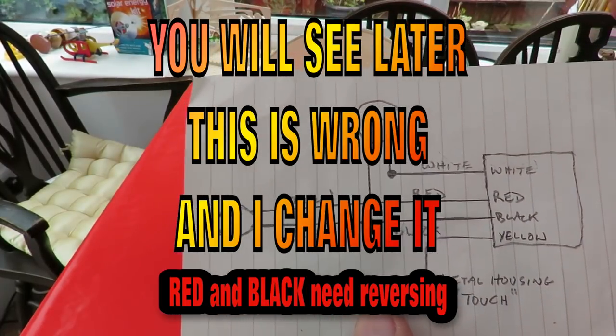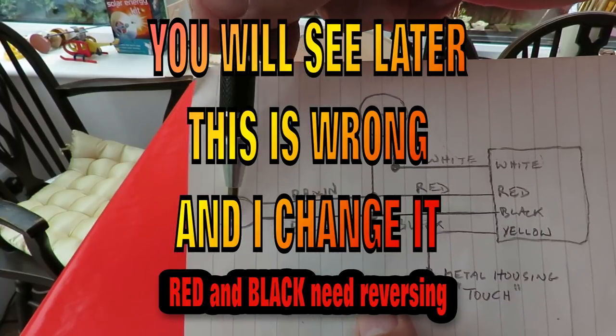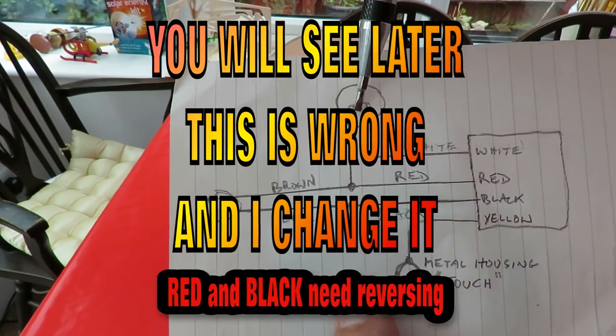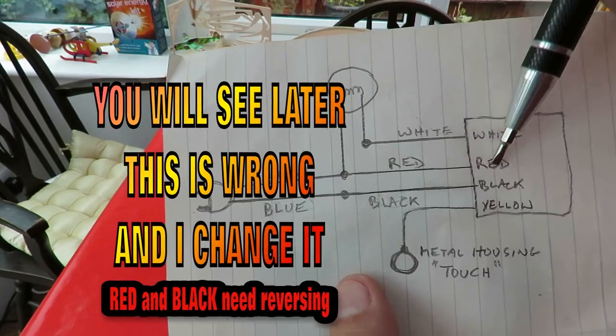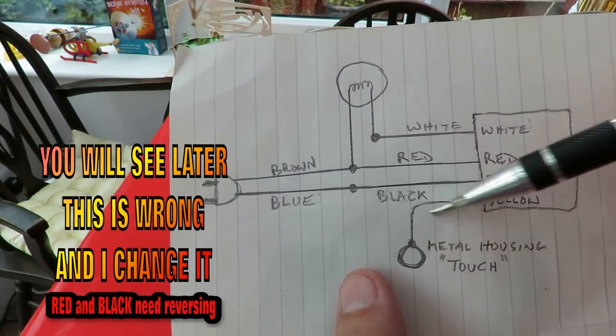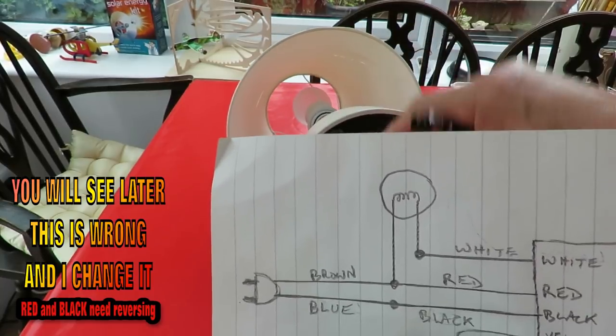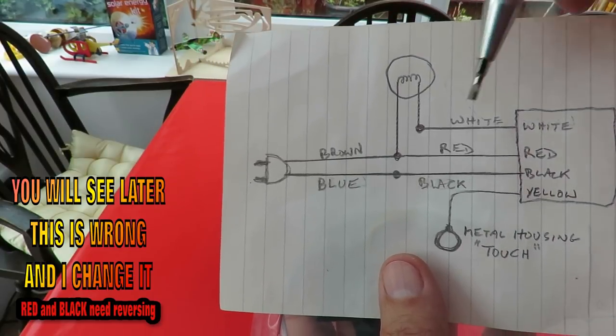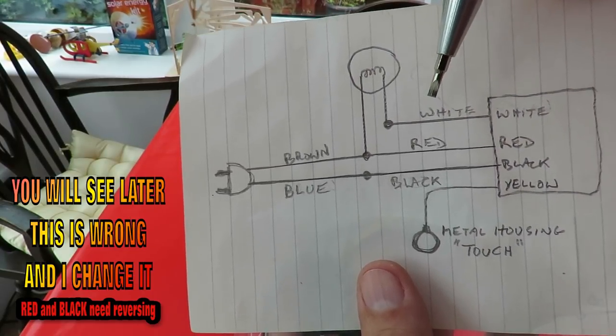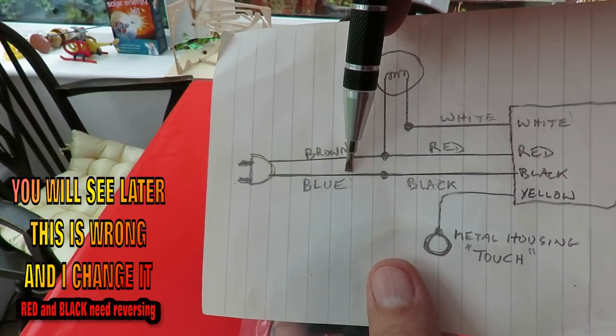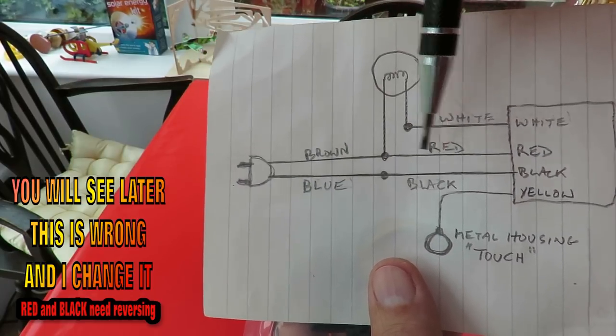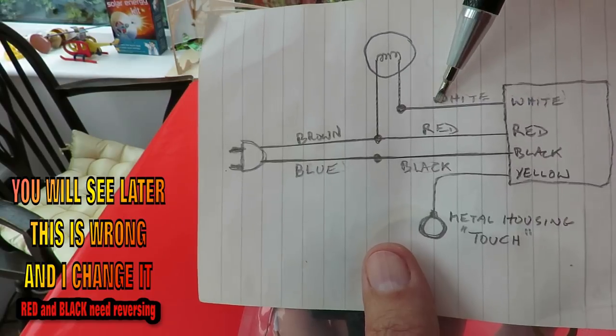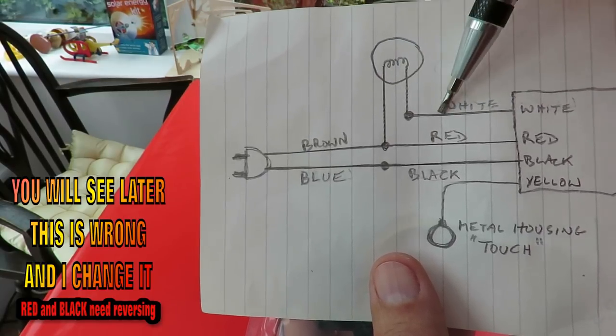So in the UK we will have brown and blue coming in from the plug. We've got a bulb that we need to light, and this unit has got white, red, black, and yellow. Yellow is the one that goes down to the metal housing and that's the one that we touch. But when we look at the diagrams, sometimes we have the blue going to the red and sometimes the blue going to the black. Sometimes the bulb is across the white and the red, and sometimes the bulb is shown across the white and the black.